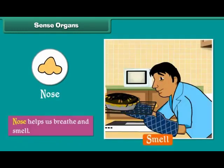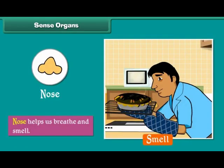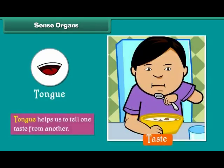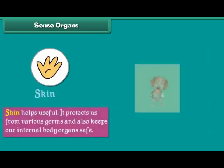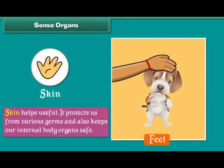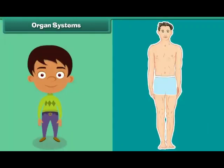The nose helps us to breathe and smell. The tongue helps us to tell one taste from another. The skin protects us from various germs and also keeps our internal body organs safe.